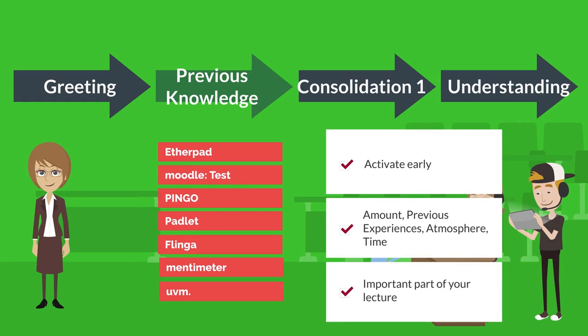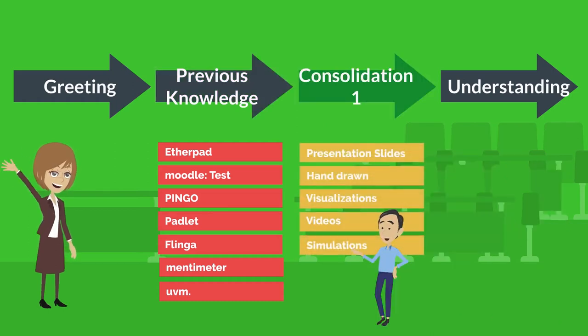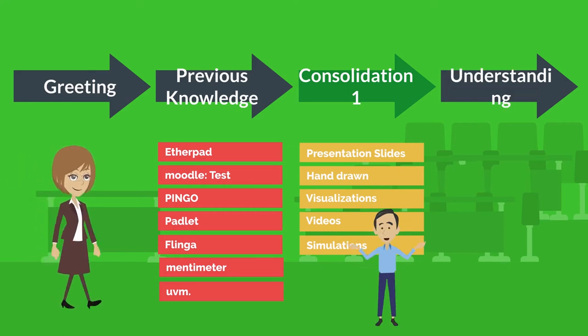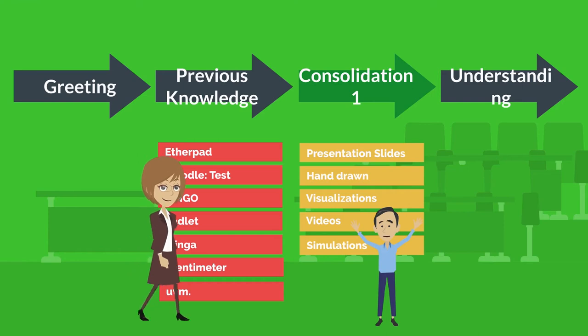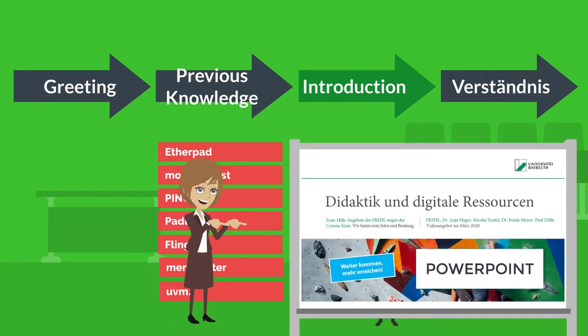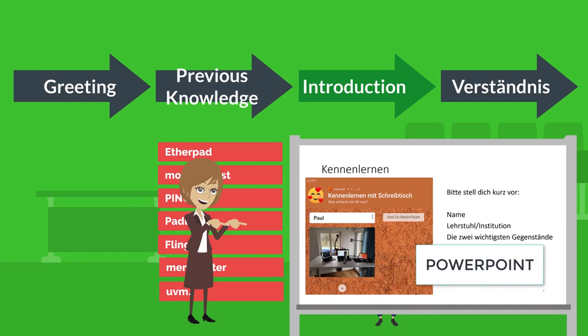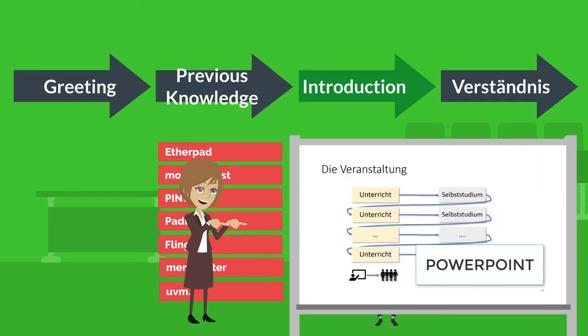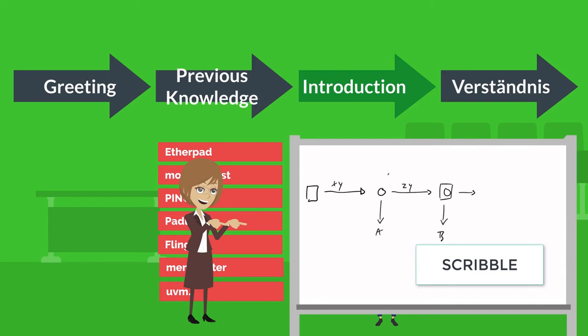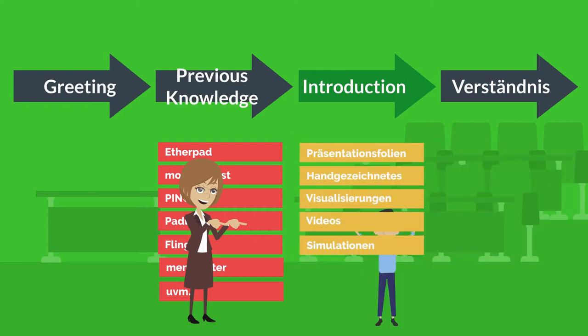It's very important that your students feel involved and not like they are watching a video of somebody talking. After this interactive part it's up to you again to provide more input to the students, another lecture. That means you can now start putting up a presentation for example or develop something in real time on a whiteboard tool. You have lots of ways to convey the information you want to give. Naturally, you should be focusing on efficiency and applying the tools in a way that makes sense so that students can easily follow you. Substance should be your focus rather than flash.